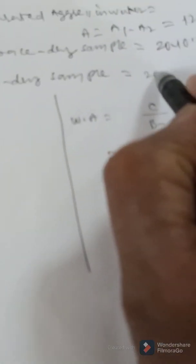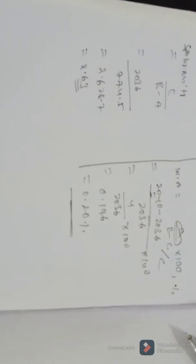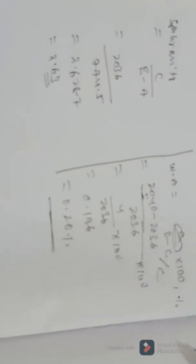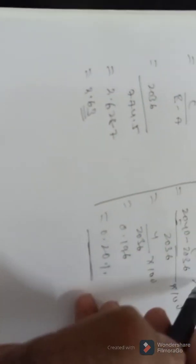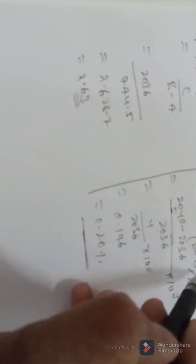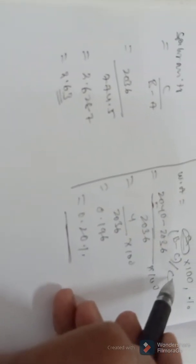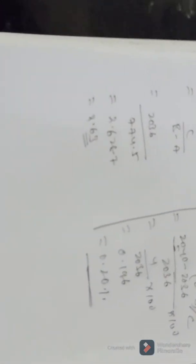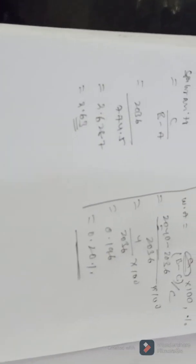The oven dry weight is 2036 grams. The saturated weight is recorded in grams. Using the formula for specific gravity and water absorption, the calculated specific gravity is 2.63 and water absorption is 0.20%.